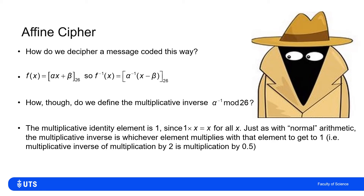If we start with what it means for anything to invert something, that means I need a reference to an identity element — which element wouldn't change an input? When it comes to multiplication, one is the identity, because multiplying 1 times x gives me x for all x. In normal arithmetic, the inverse is one over that number: multiplication by 2 is inverted by multiplying by a half, and multiplying by 10 is inverted by multiplying by 0.1. But I need to think about what the multiplicative inverse is in a modular arithmetic setting.